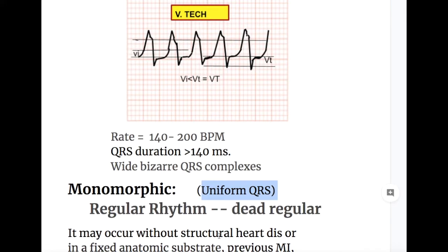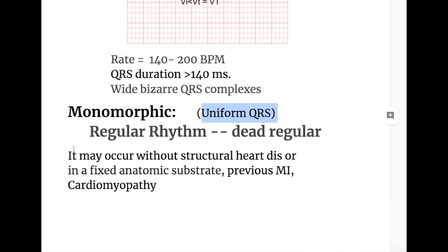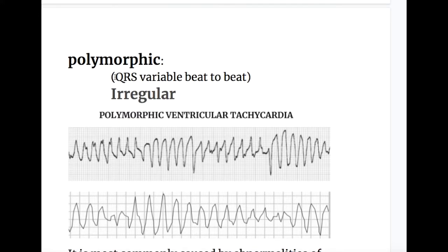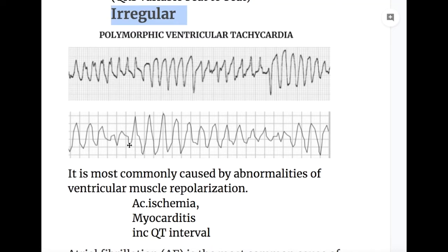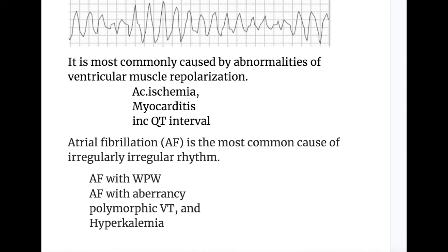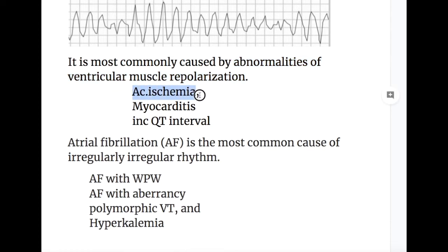Monomorphic ventricular tachycardia may occur without structural heart disease, or in a fixed anatomic substrate such as previous MI or cardiomyopathy. Polymorphic ventricular tachycardia has QRS complexes that are variable from beat to beat with irregular rhythm — wide bizarre complexes with irregular rhythm. Polymorphic VT is most commonly caused by abnormalities of ventricular muscle repolarization.